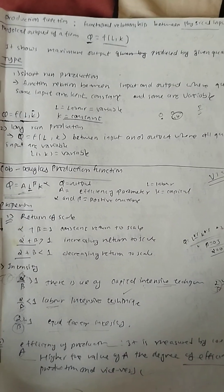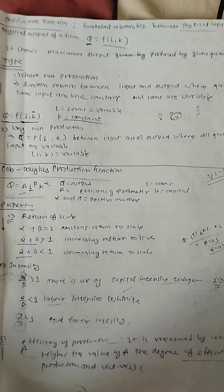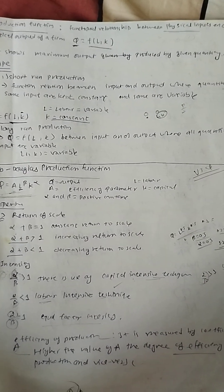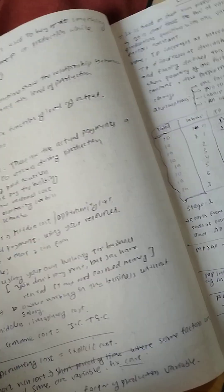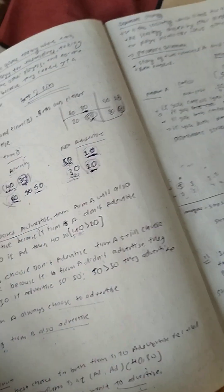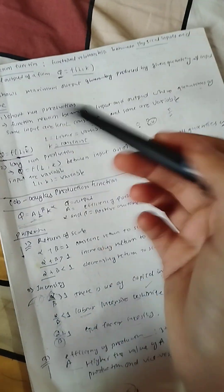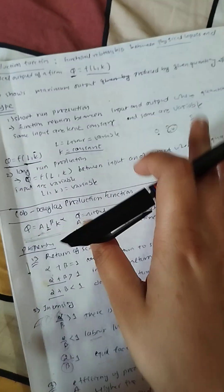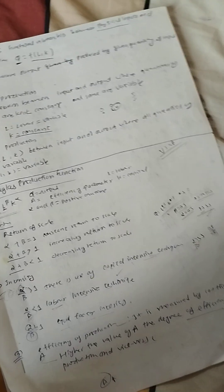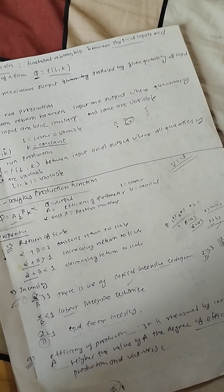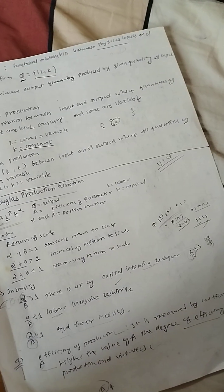Hi guys, I am back with new Unit 4 - that is our production function. I am going to go through notes in an exam-oriented way. I will study the theory and then do numerical problems. This is one short video of Unit 4 and it is going to be worth about 15 marks.